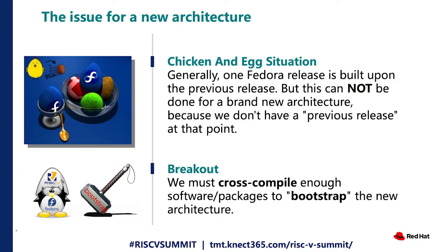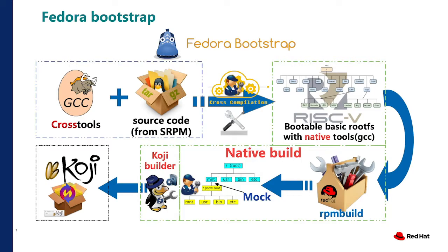Every new Fedora version comes from the previous one. But for RISC-V, we don't have a previous one, so that's a chicken-and-egg situation. To break out of this, we have to use a cross-compiler and do something we call bootstrap. Bootstrap uses a cross-compiler tool and source code from SRPM to do cross-compilation, making a bootable basic root filesystem with native build tools like GCC. We also need RPM build to build RPM packages, and mock, which creates a new root filesystem for a clean package build environment.